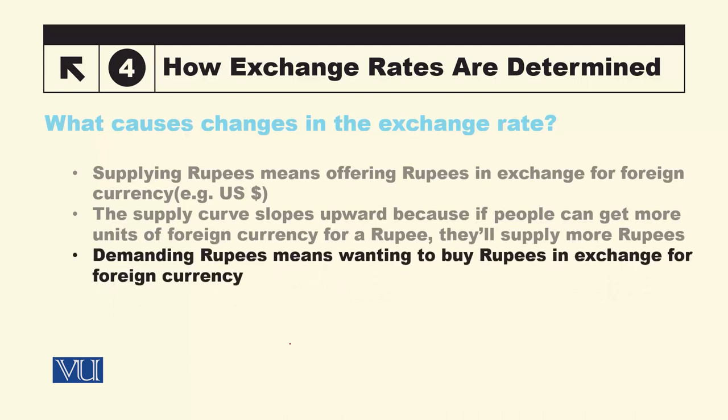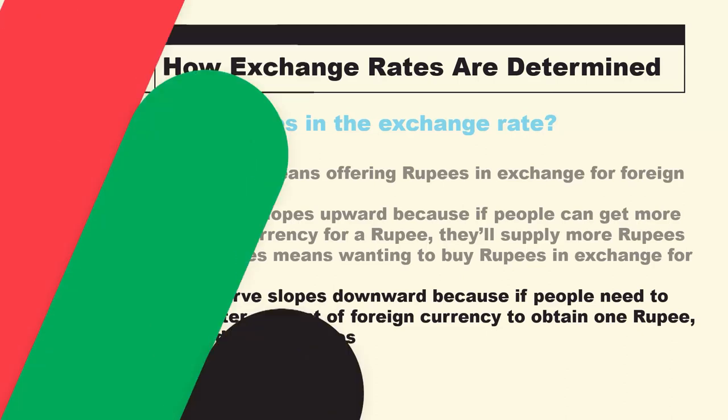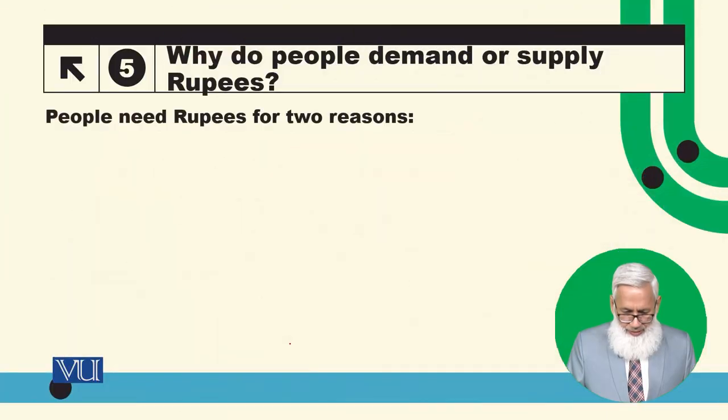Demanding rupees means wanting to buy rupees in exchange for foreign currency. The demand curve slopes downward because if people need to give up a greater amount of foreign currency to obtain one rupee, they will demand fewer rupees. The simple demand and supply rule is applied here.